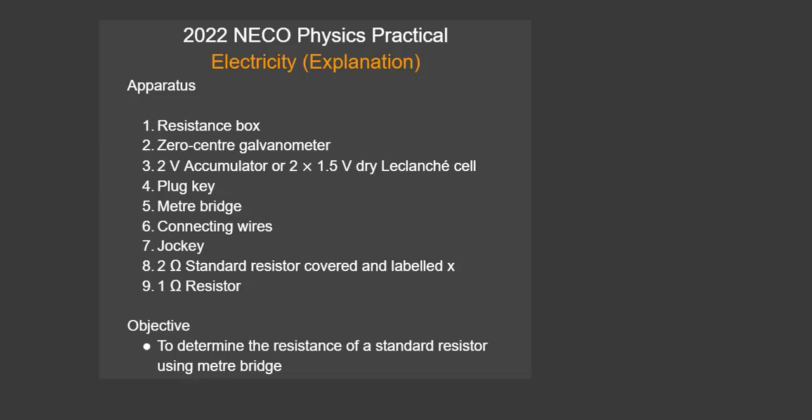In this year's experiment you'll be provided the following apparatus: a resistor box, a resistance box, a galvanometer, a two-volt accumulator, a plug-key, meter bridge, connecting wires, jockey, and a two-ohm standard resistor which will be concealed and labelled X. You'll also be given a one-ohm resistor whose value will be made known to you. From this apparatus we can deduce that the objective is to determine the resistance of the concealed standard resistor using the meter bridge.